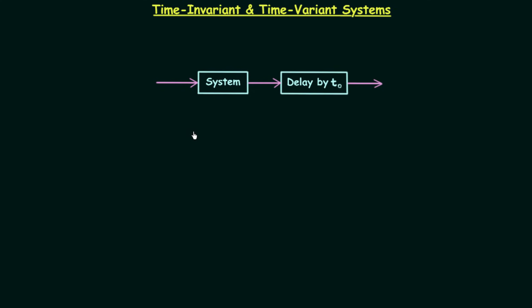Using the same notation as before, x(t) will be the input to the system. We need to check if this system is time-invariant or not. The system gives us output y(t), but there is one change: instead of directly using this output y(t), we first provide a delay by t₀ through a second system, so y(t) becomes y(t−t₀) after passing through that delay system.